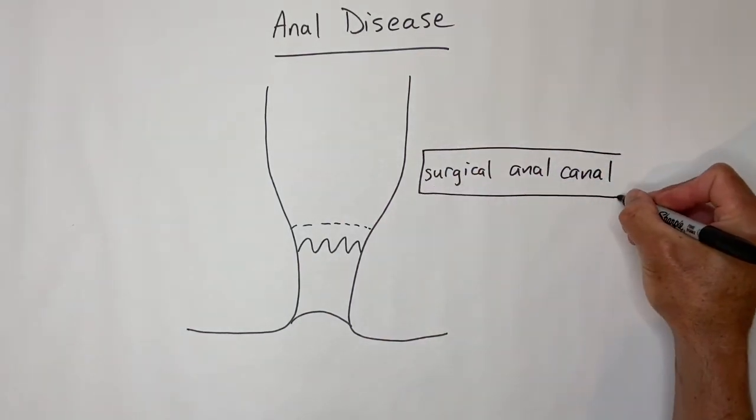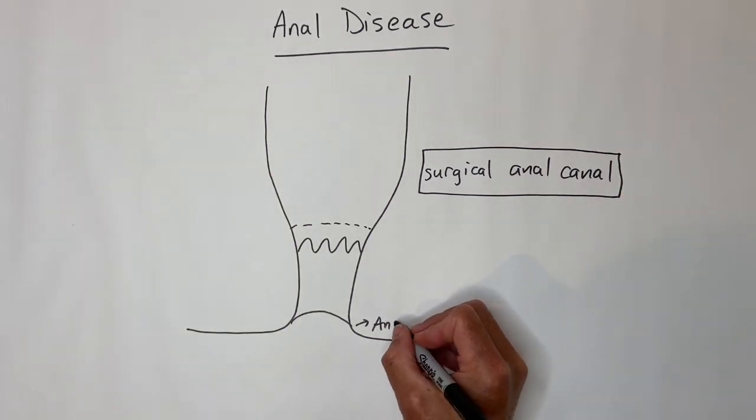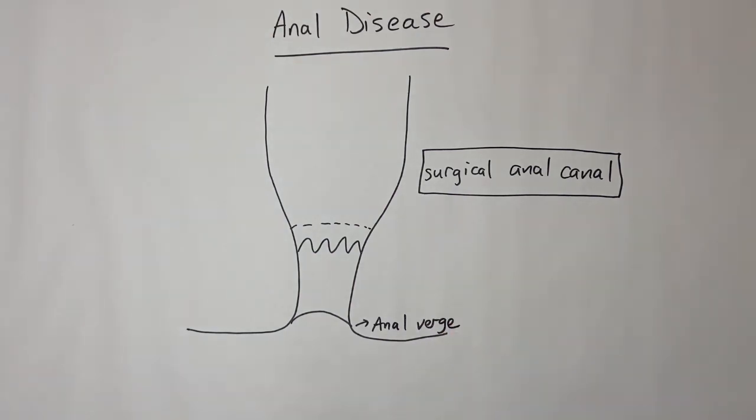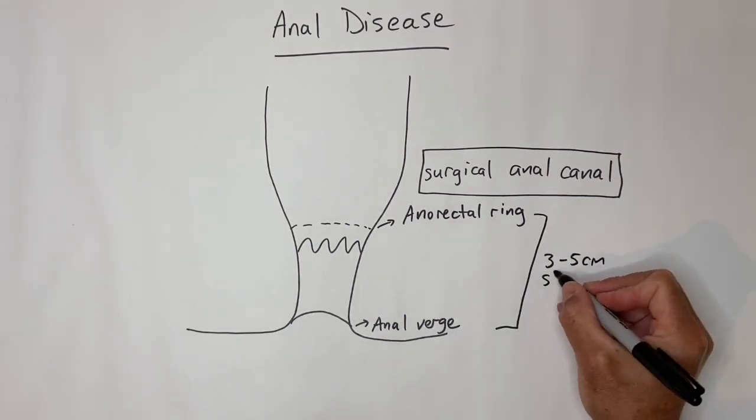Let's talk about some anatomy first. The surgical anal canal is defined by the sphincter complex and extends from the anal verge to the top of the anorectal ring, defined by sphincter muscles. The length can range from 3 to 5 centimeters, with women tending to have shorter ones.